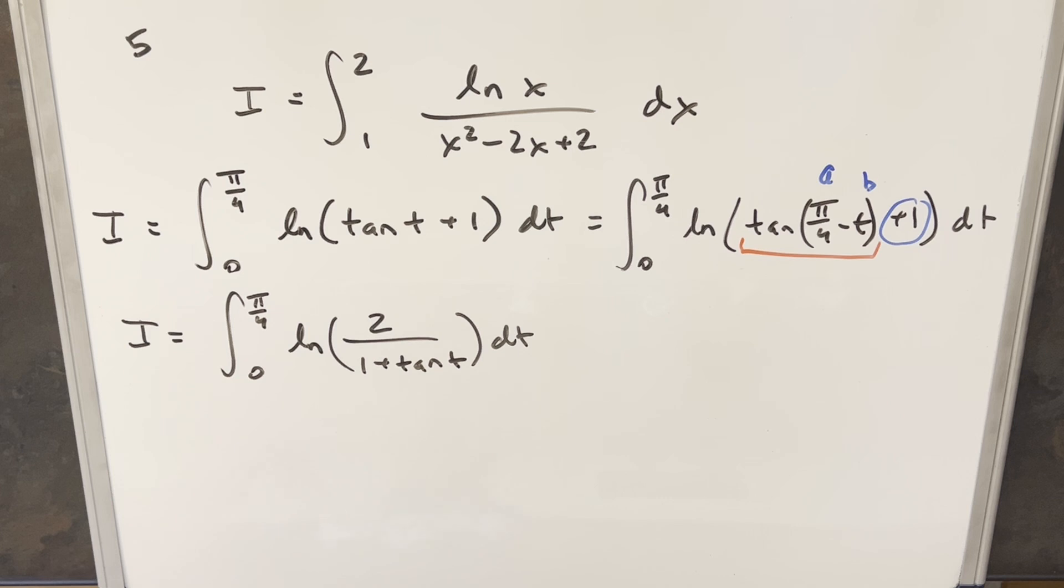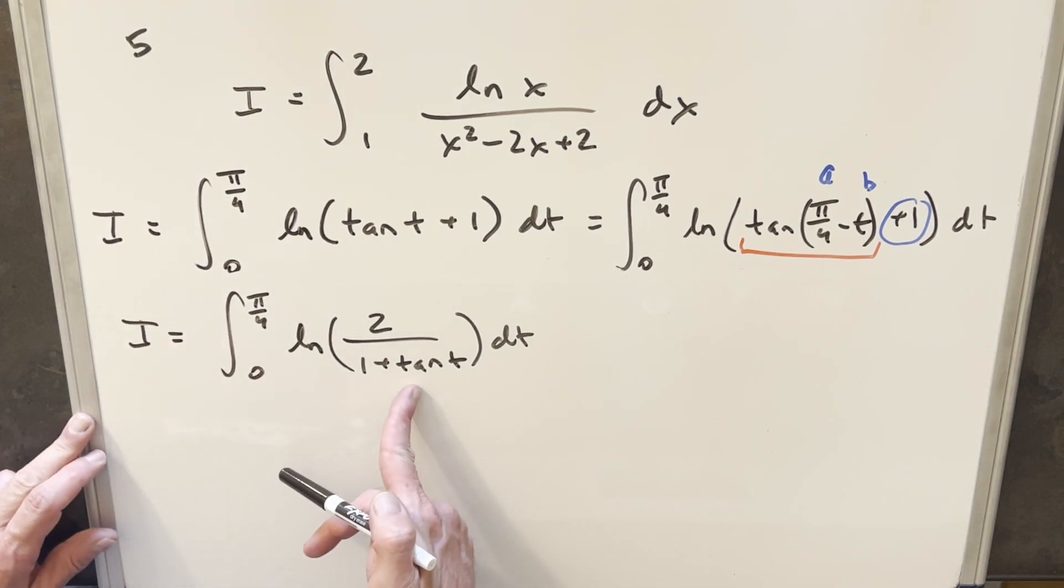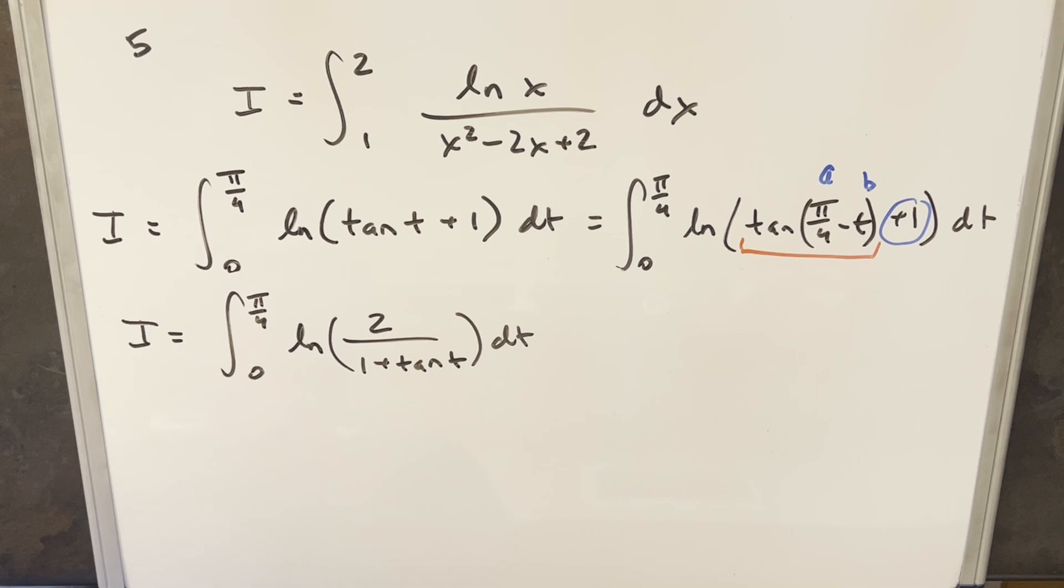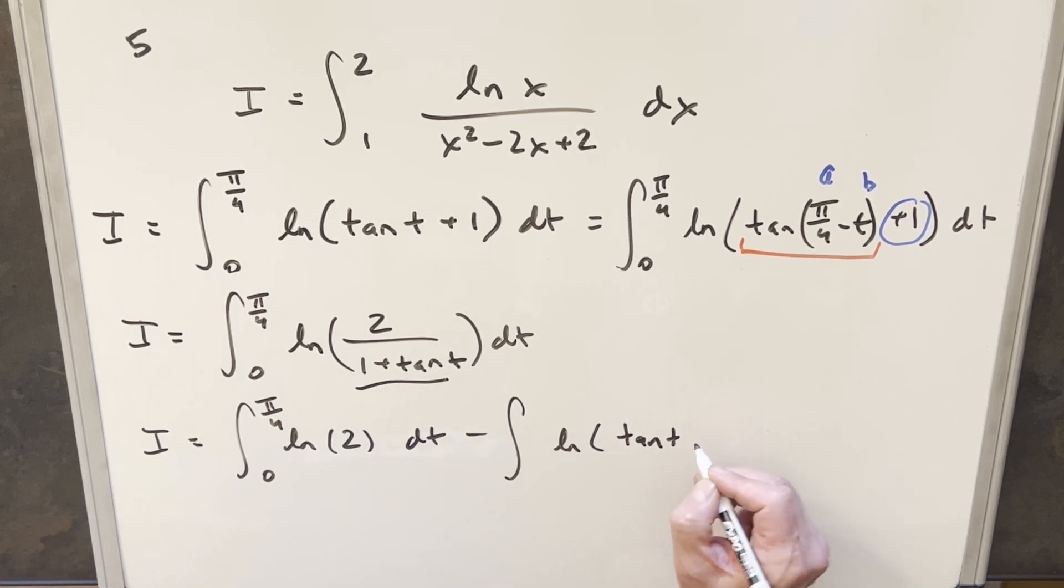So now that we have this rewritten, we've got division inside the natural log. What I can do is use log properties on this to split this up and subtract it, create 2 integrals. So when we do that, the first one is just going to be natural log of 2 from the numerator. And then for the second one, we have a minus sign, and we're just going to have this part. So this is going to be just natural log, I'm going to change the order and write it as tan t plus 1.